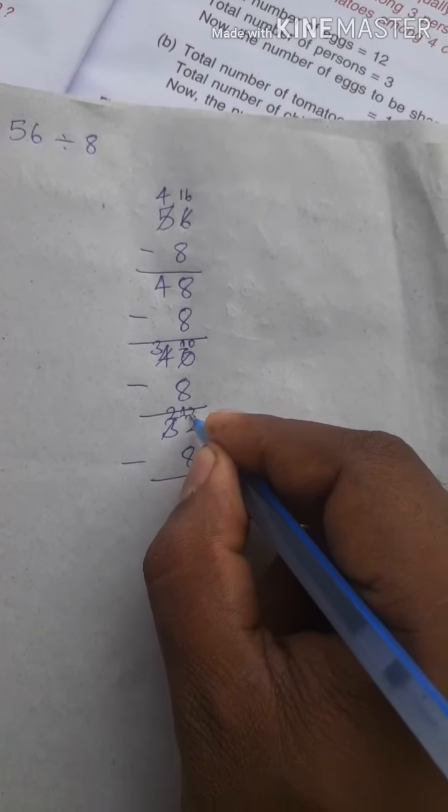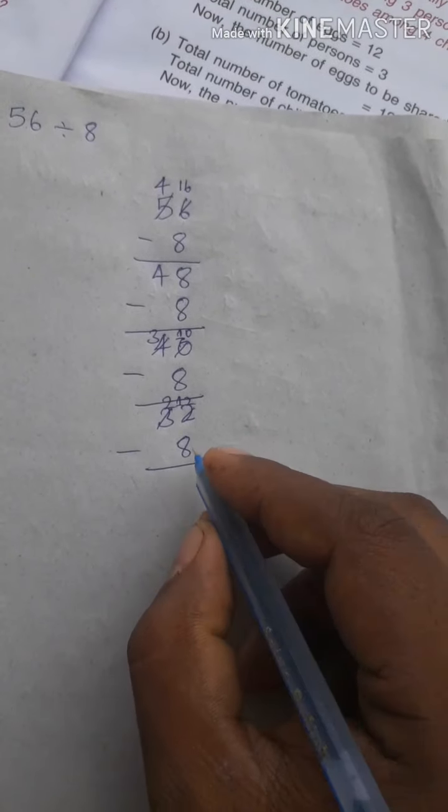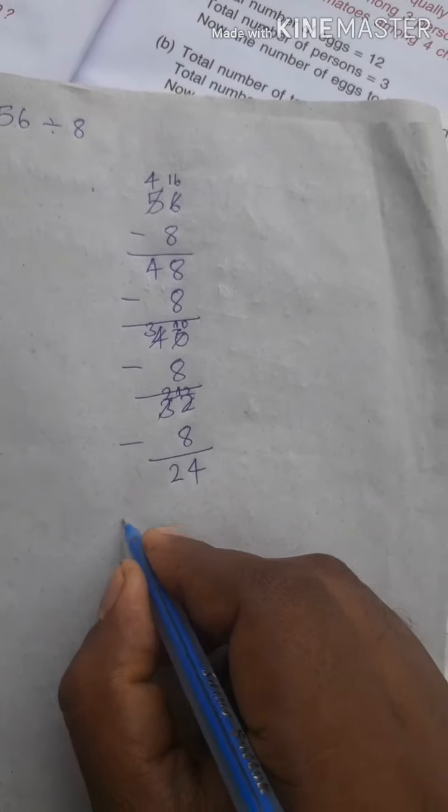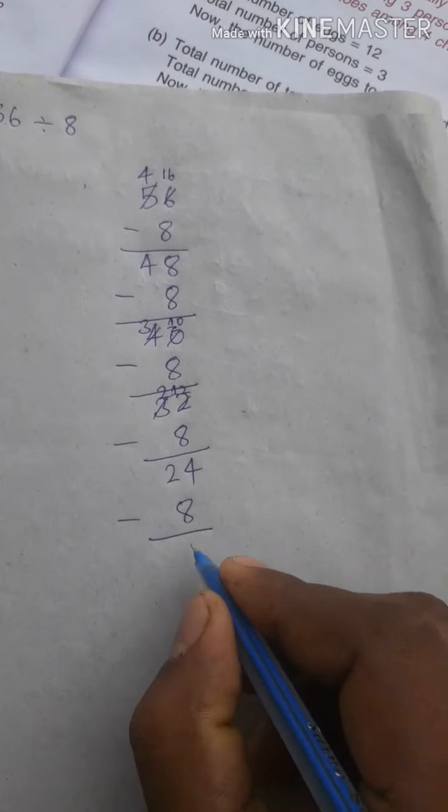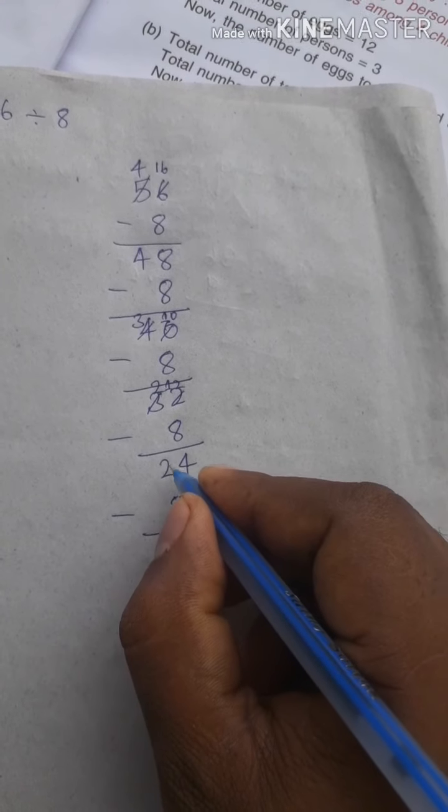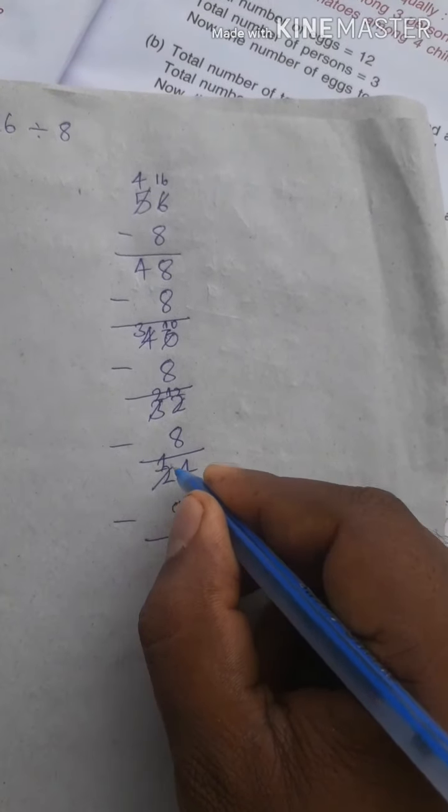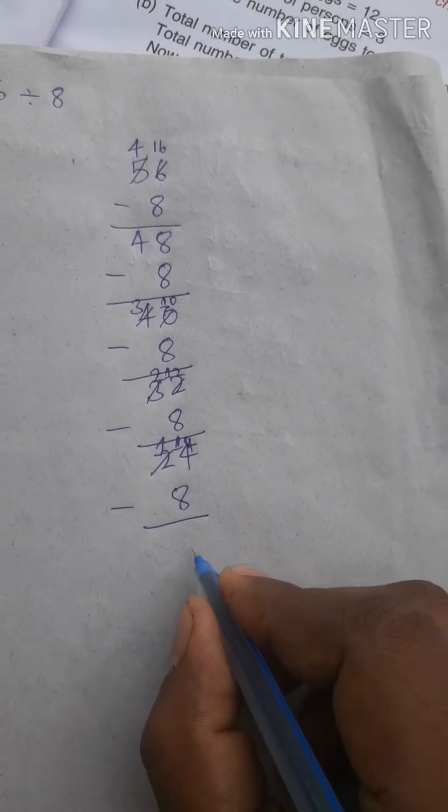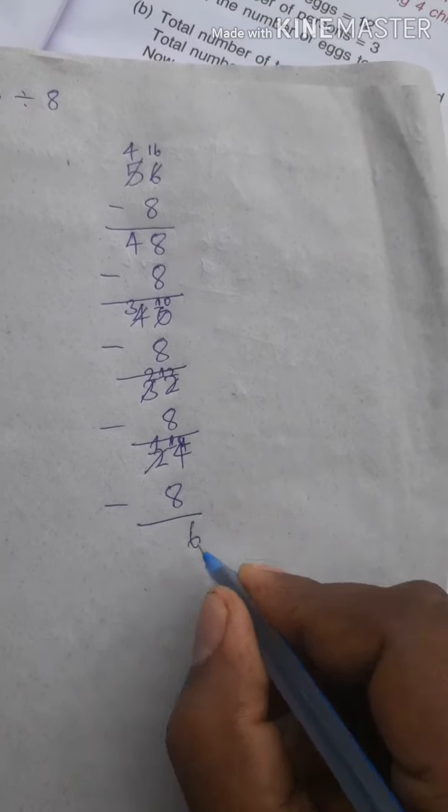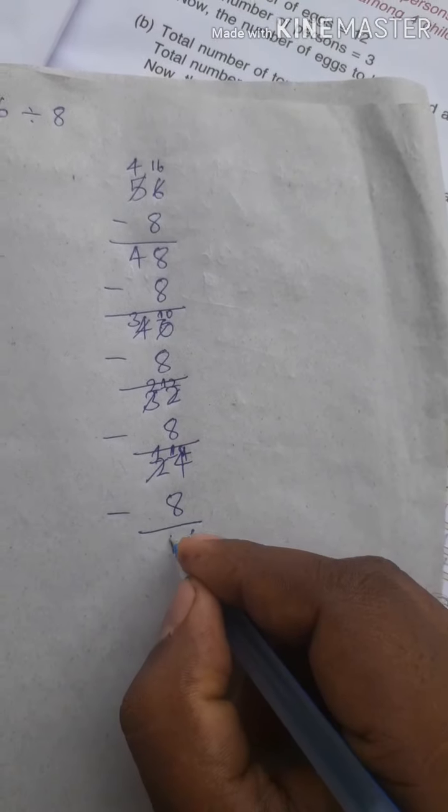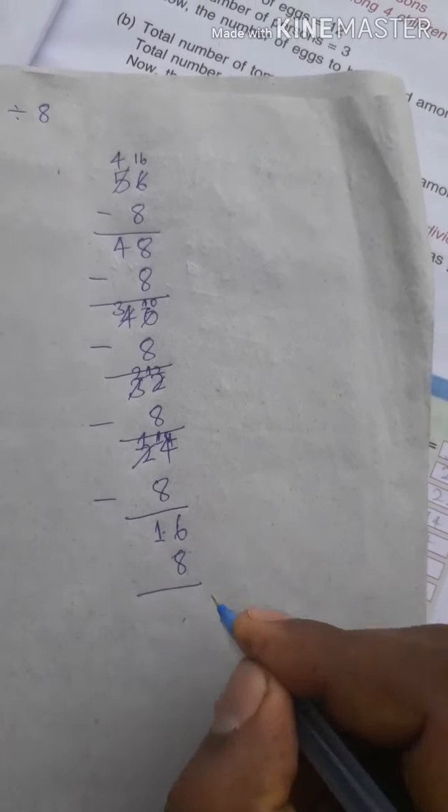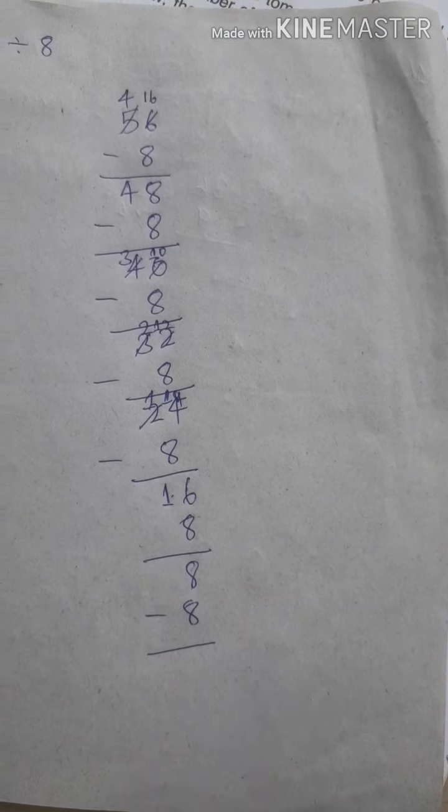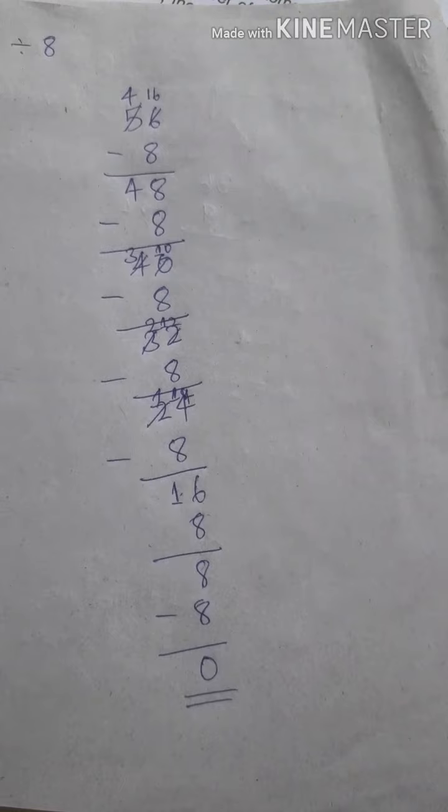Again you subtract. 12 minus 8. What is 12 minus 8? Is 4. 2 here down. Subtract again. 14 minus 8. What is 14 minus 8? Is 6. 1 here down. Again you subtract, you will get 8 here, then again 0.